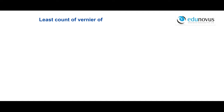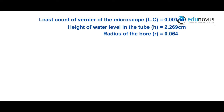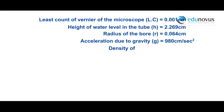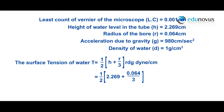Least count of the vernier scale LC = 0.001 cm. Height of water level h = 2.269 cm. Radius of the bore r = 0.064 cm. Acceleration due to gravity g = 980 cm/s². Density of water = 1 g/cm³. Therefore surface tension T = (1/2) × (h + r/3) × r × d × g = (1/2) × (2.269 + 0.064/3) × 0.065 × 980 × 1 = 71.15 dynes per centimeter.